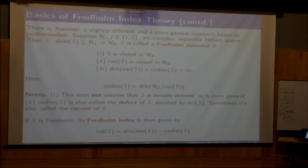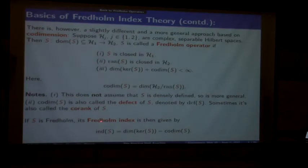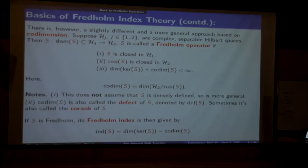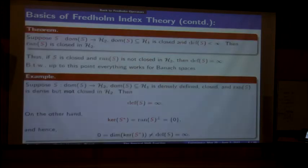If the operator satisfies those three conditions—this is Fredholm in a slightly more general context—you would say the index is the dimension of the null space minus the codimension. The question is: what's the relation between these objects? It's interesting.